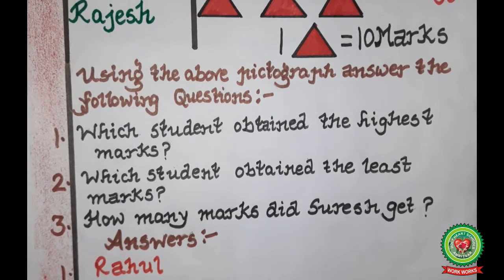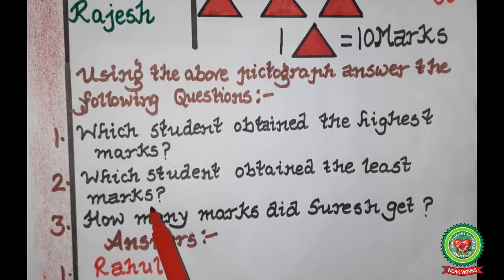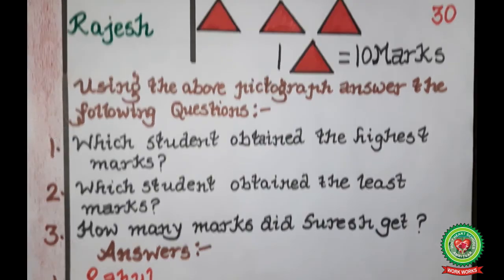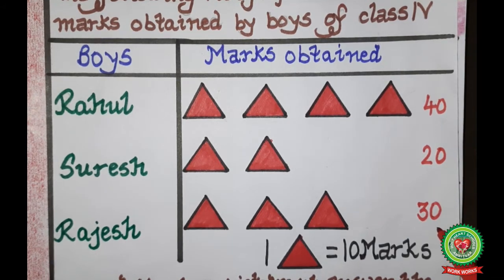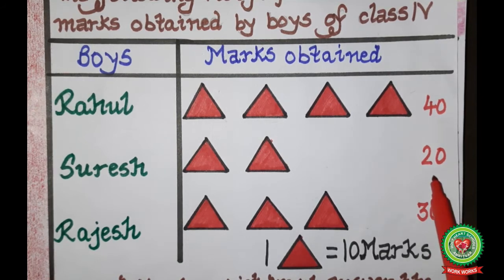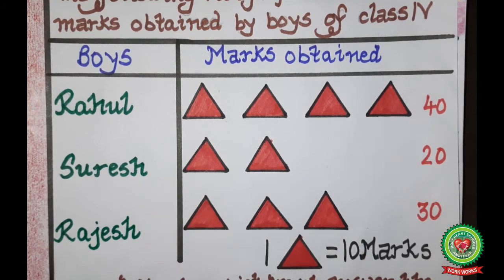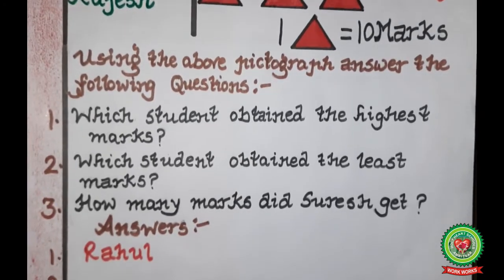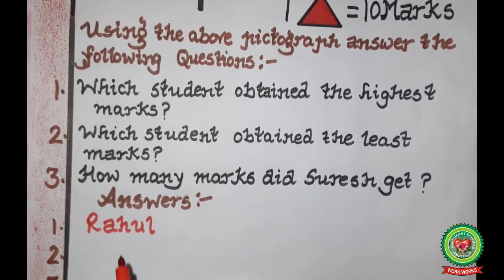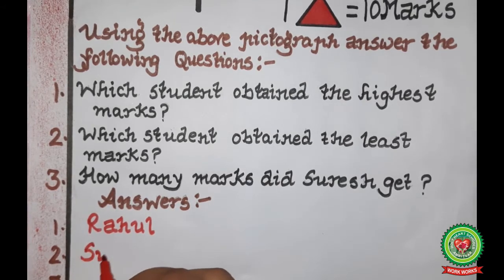Question number two: which student obtained the least marks? Comparing 40, 20 and 30, the least number is 20, and the student who obtained 20 marks is Suresh. So the answer is Suresh — Suresh obtained the least marks.